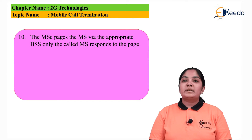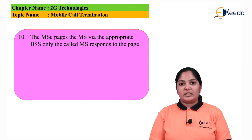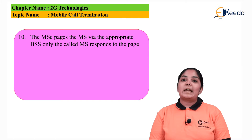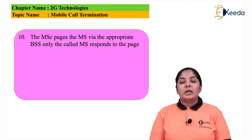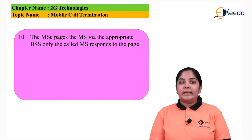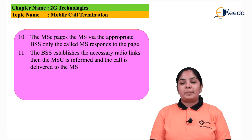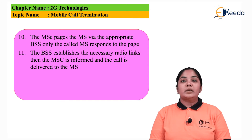In the tenth step, the MSC will page the mobile station using an appropriate Base Station Subsystem, which has the transmitters and receivers. Only the mobile phone to which the call is intended will respond to the page. On the eleventh step, the mobile station will tell the MSC that it has started the frequency on which the call is to be continued.